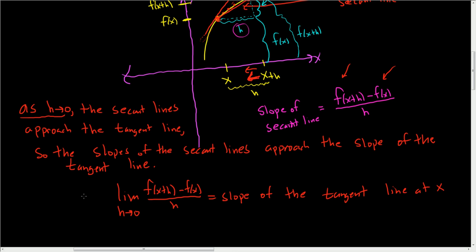And we call this the derivative. When this limit exists, we say it's the derivative of f, and we write f prime of x equals this limit. So the derivative of x is the slope of the tangent line to the graph of the function at x.